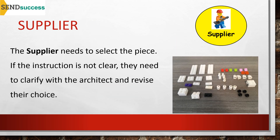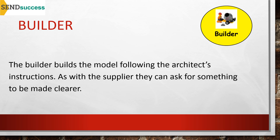To clarify further: the supplier needs to select the piece the architect has requested, and if the instruction isn't clear they need to clarify with the architect and revise their choice. The builder constructs the model using the pieces supplied by the supplier and following the architect's instructions; as with the supplier, they can ask for something to be made clearer.